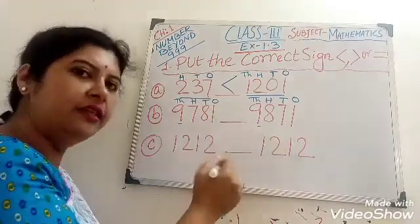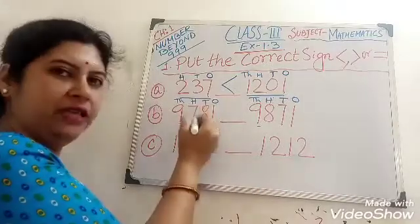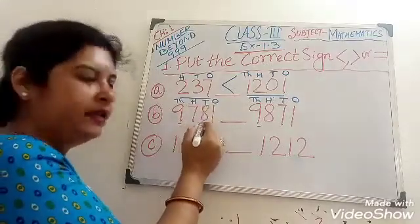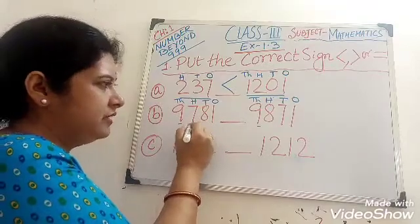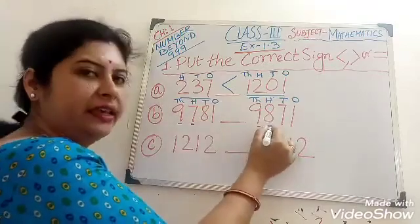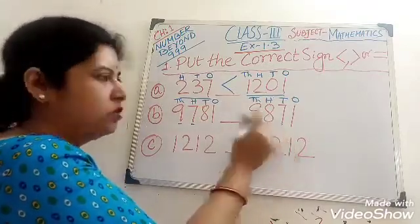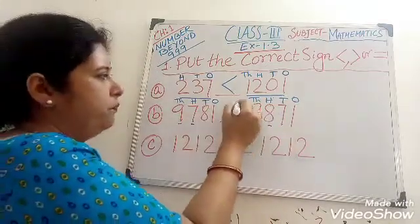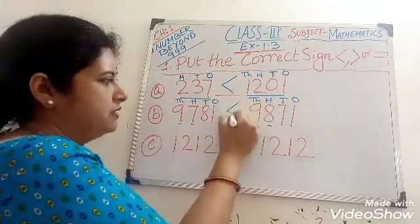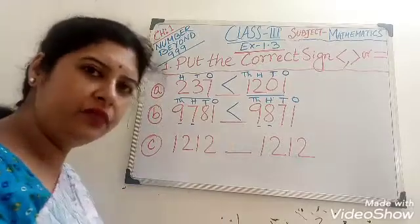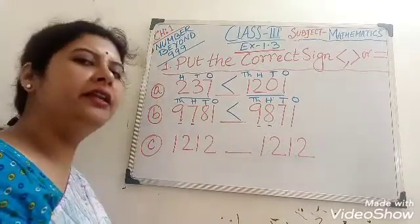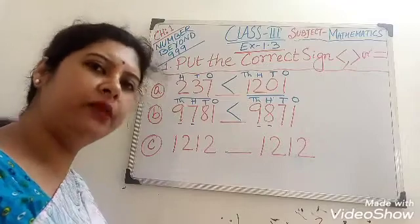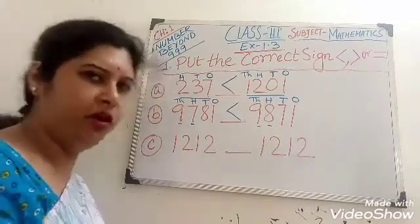Next, move on to the next place value — that means the 100 place. In the 100 place, here is 7 and here is 8. So 8 is bigger than 7. So we put this sign. In this way, you can easily differentiate which number is bigger and which number is smaller.